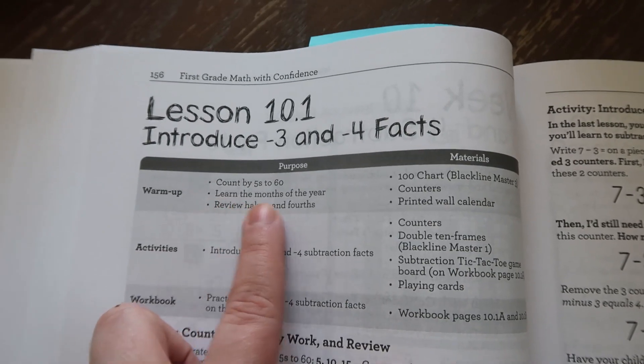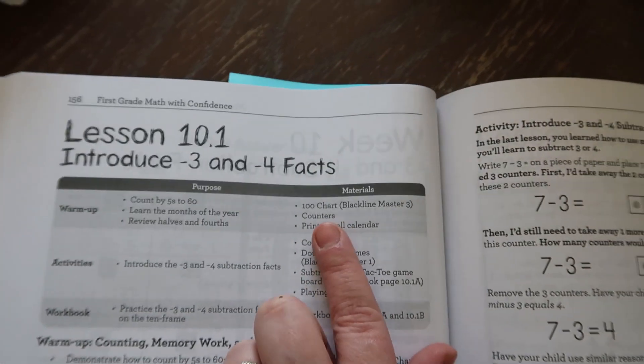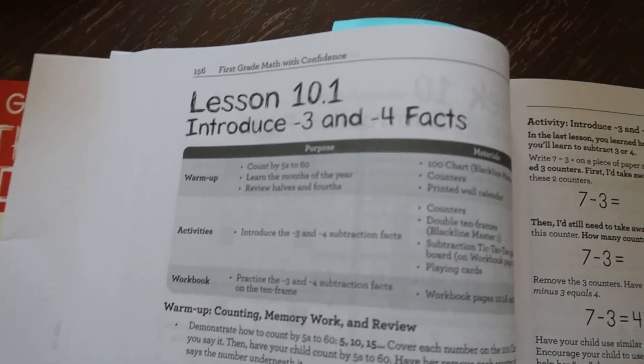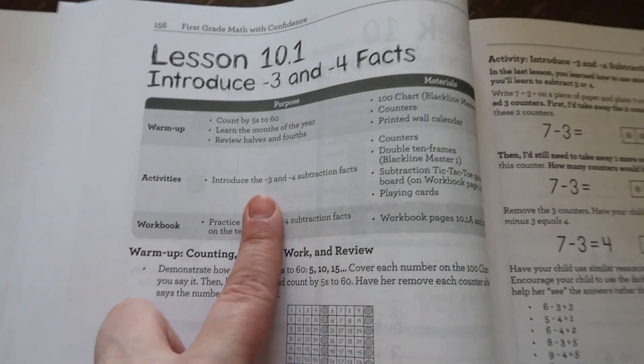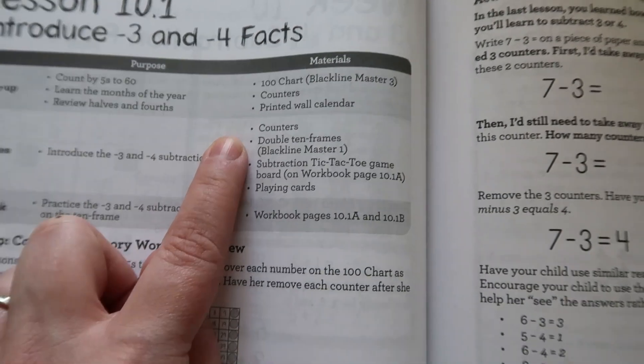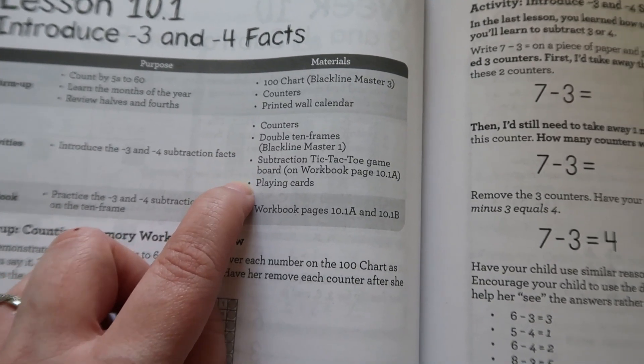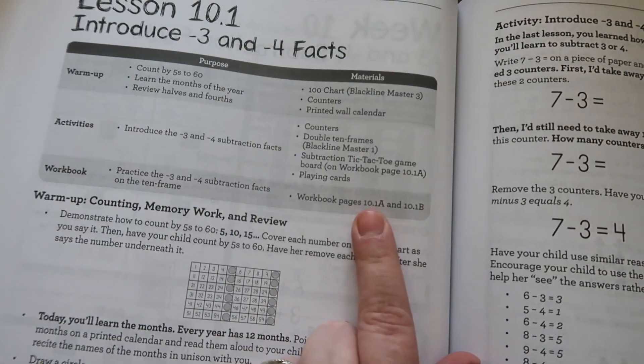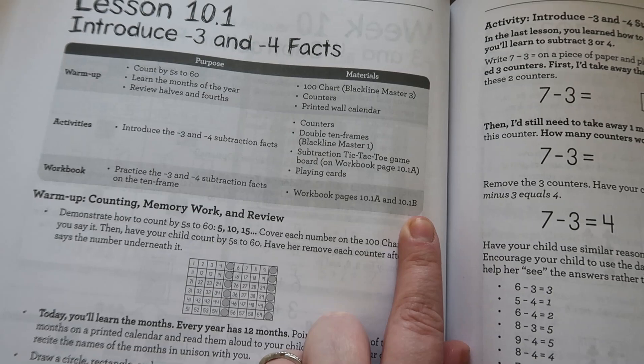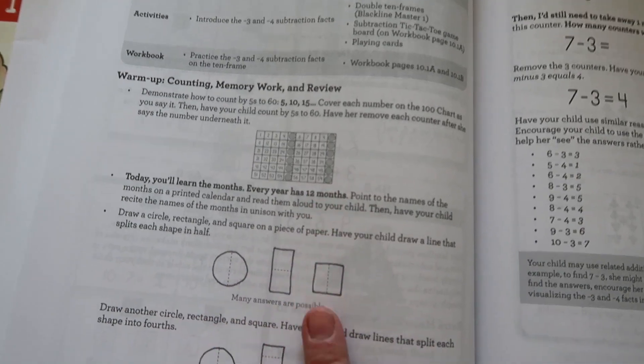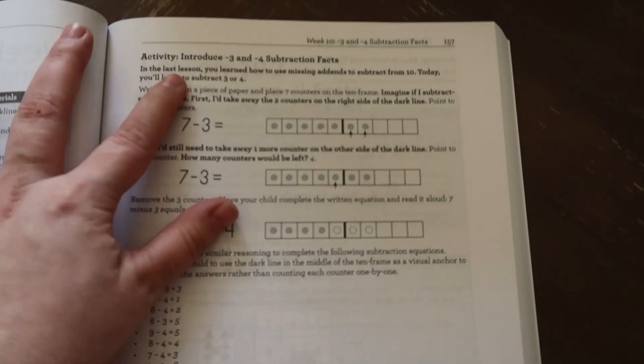So this time we're going to count by fives to sixty, learn the months of the year, review halves and fourths. You'll need your 100 chart, counters, and a printed wall calendar. Then for activities you're going to introduce the minus three and minus four subtraction facts, and for that you'll need counters, your 10 frame, subtraction tic-tac-toe game board and playing cards. For the workbook you will be doing workbook pages 10-1A and 10-1B. So here is all the warm-up that you're going to be doing. My son really enjoys the warm-up and I enjoy it because it's lots of nice review.